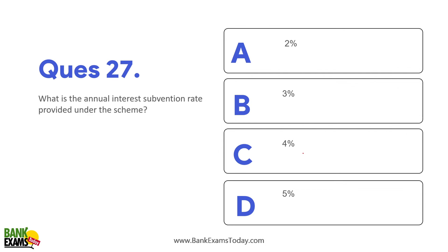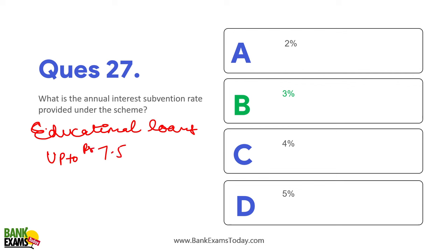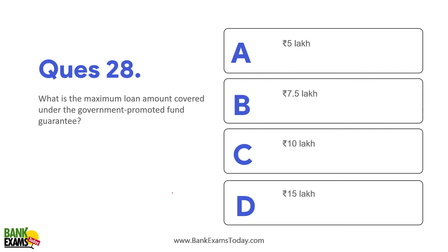What is the annual interest subvention rate provided under the educational loan scheme? There are two schemes: one for loans up to ₹7.5 lakhs — no collateral or security required; and for loans up to ₹10 lakhs, a 3% interest subvention is provided. The maximum loan amount covered under the government-promoted fund guarantee is ₹7.5 lakhs.